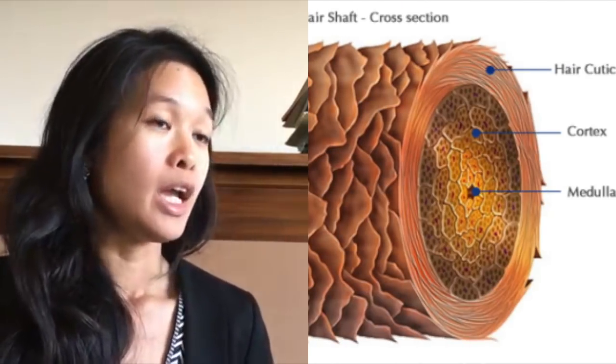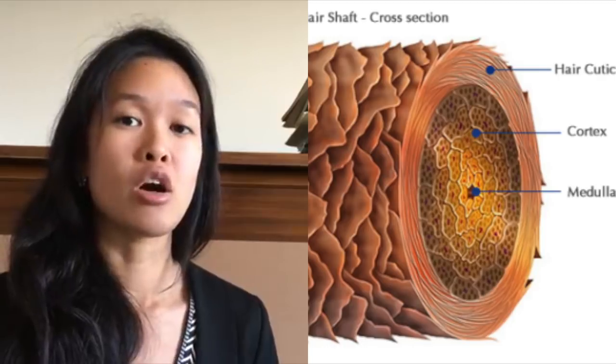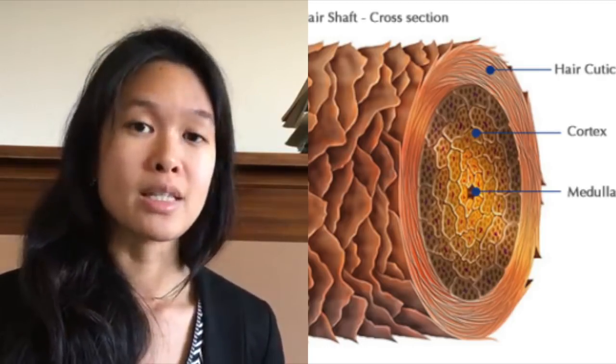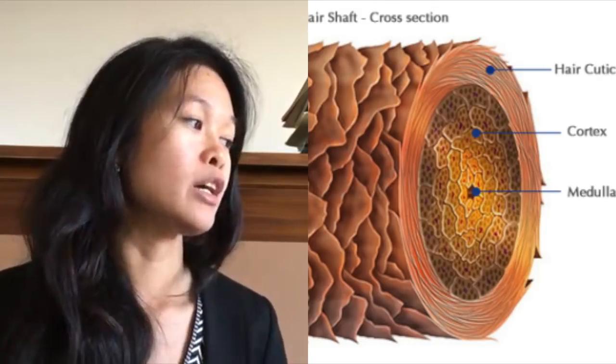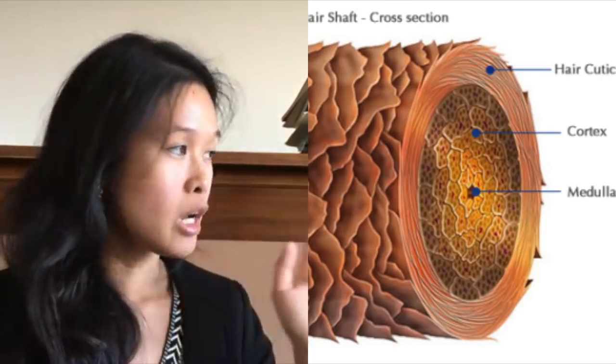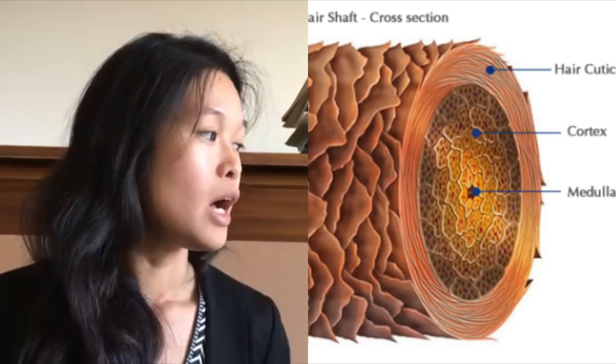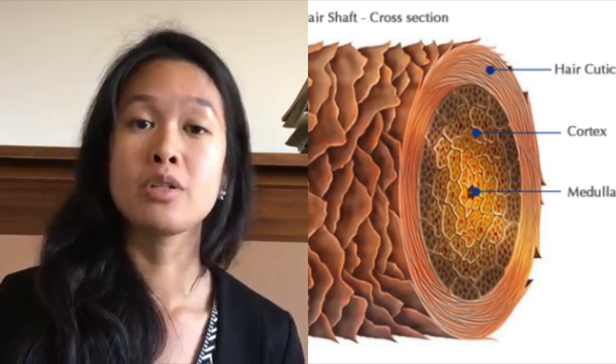A lot of people are under the impression that there are kinks and burrs along a bow hair and that those are what grip and pull the string, initiating string vibration and producing sound. However, that is not true. Here is a picture of a cross-section of a hair: the innermost layer is called the medulla, the next outer layer is the cortex, and the outermost layer is the cuticle, which is made up of keratin — a protein commonly found in hair and nails.